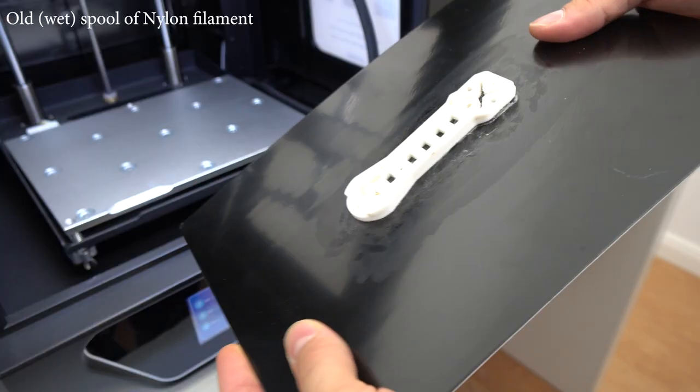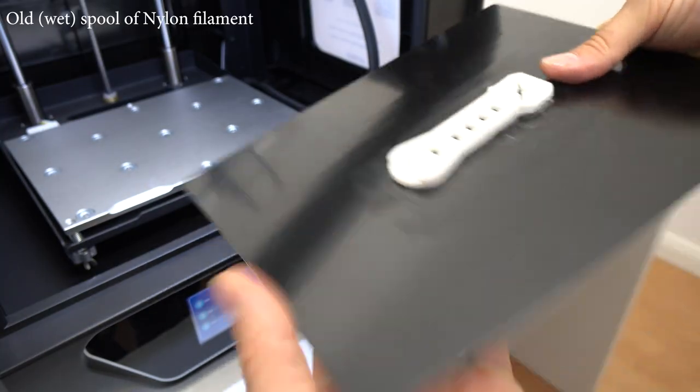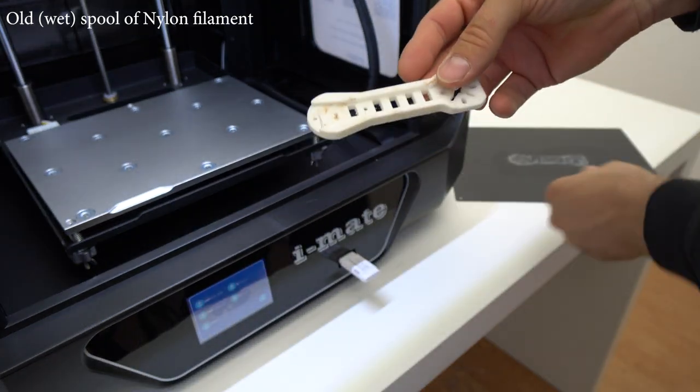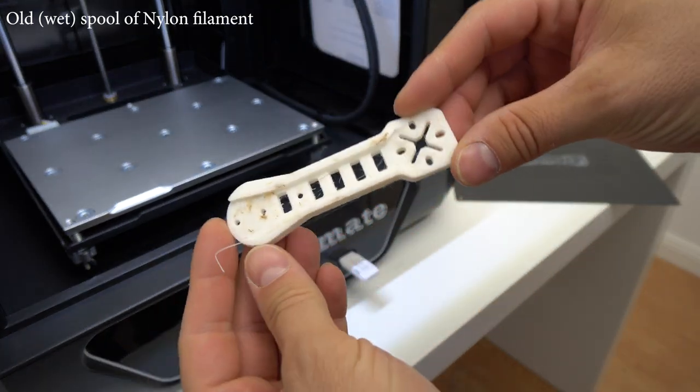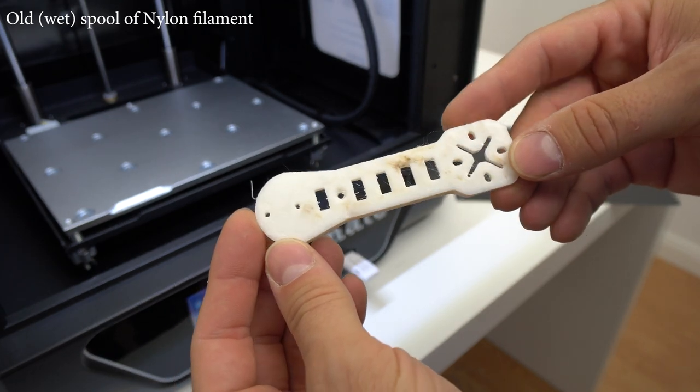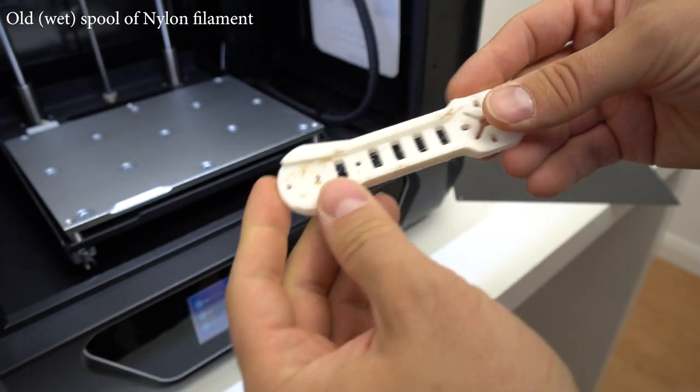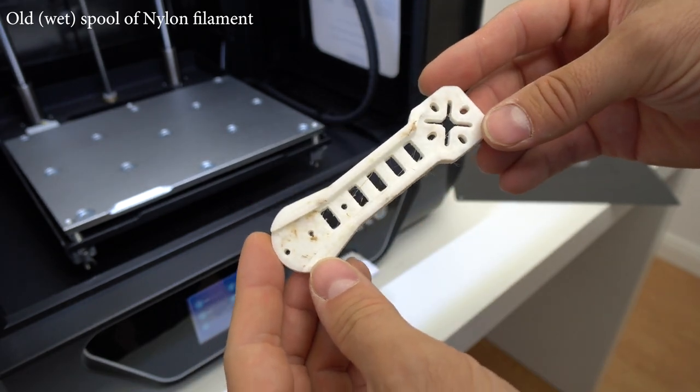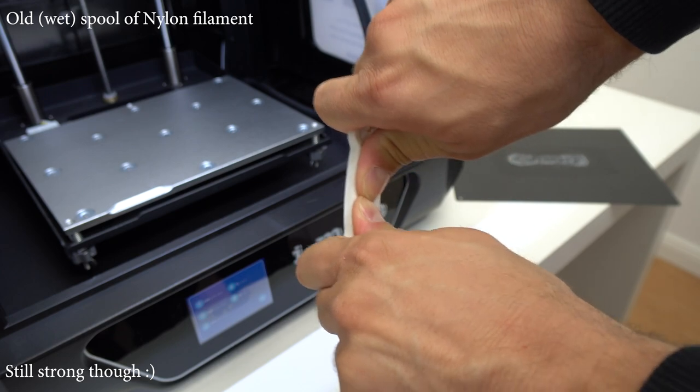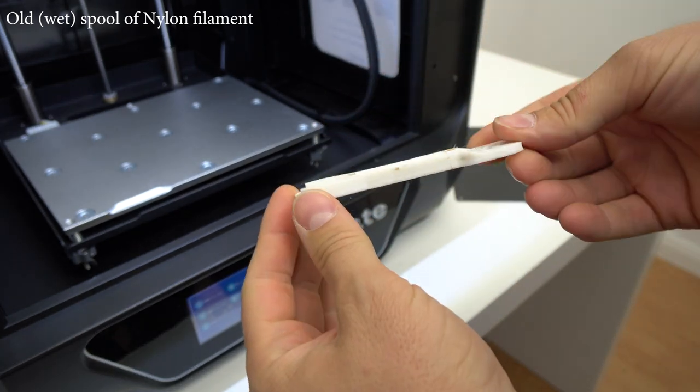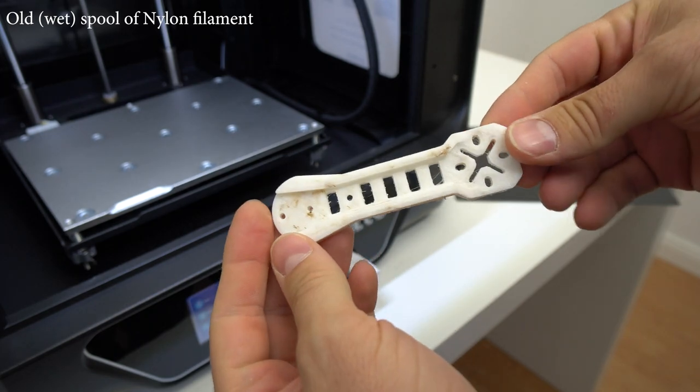And last but not least is the nylon. So I printed out the same model this time in nylon but it did not turn out that great and it had some burnt spots. Because my spool of nylon is a few years old and it's full of moisture and I did not bother to dry it in an oven as it will take days to dry it completely. So this one is on me. I'm sure that the printer will print this model perfectly fine with a new spool of nylon.